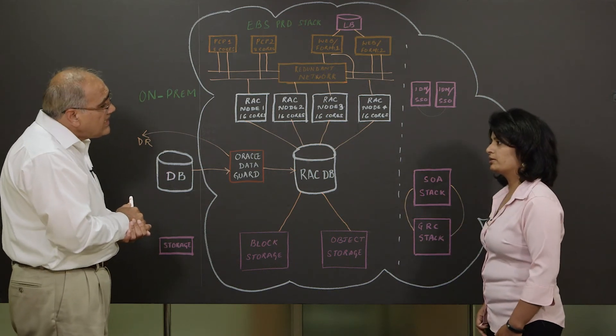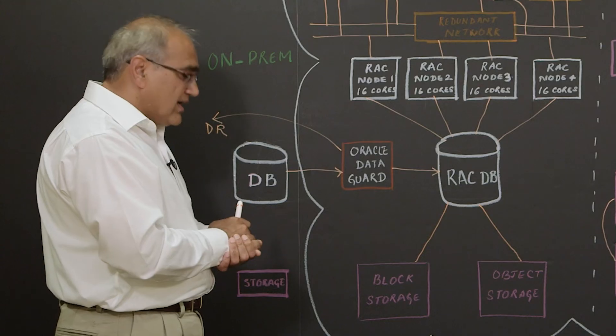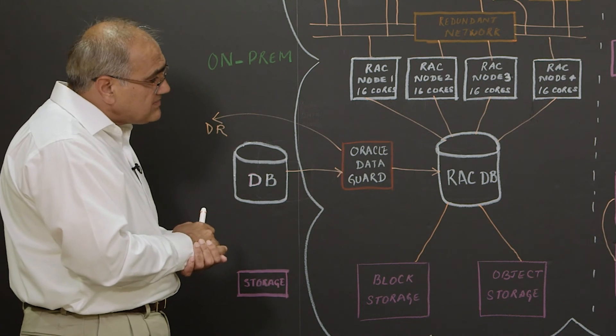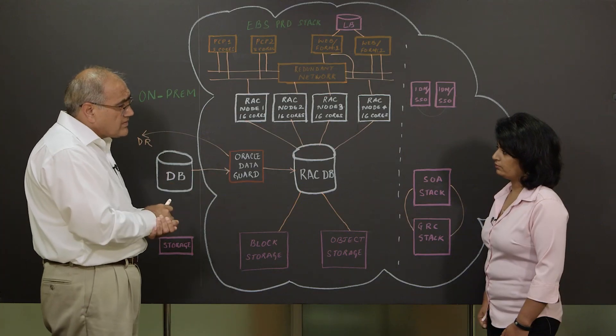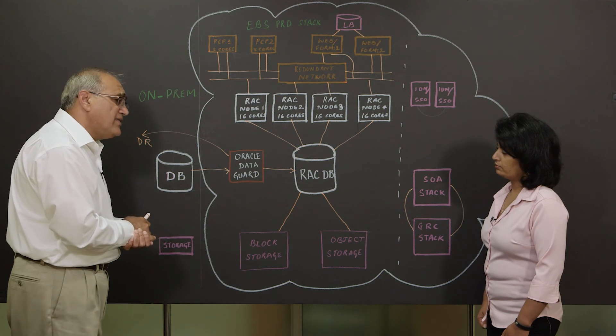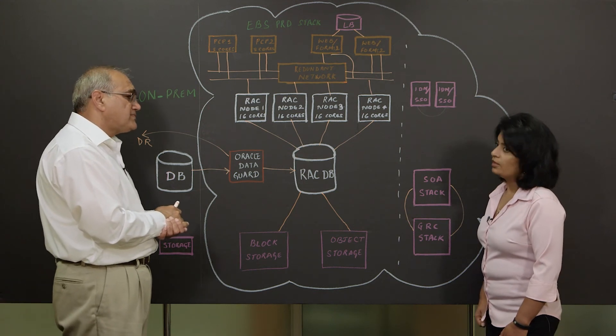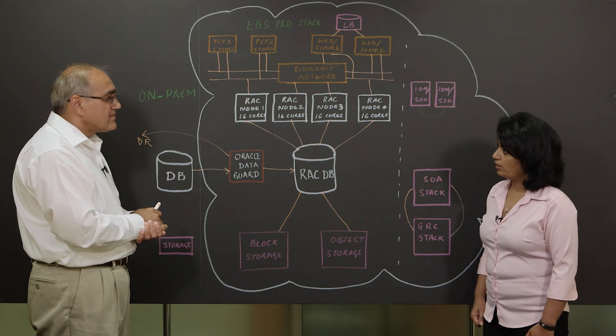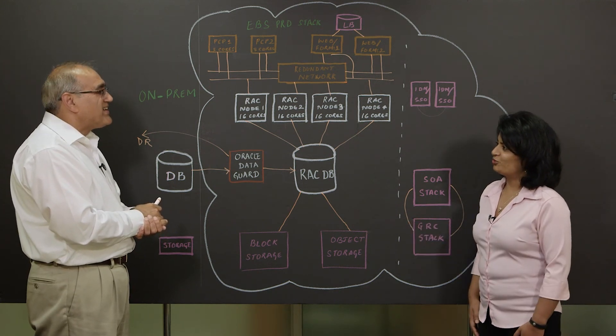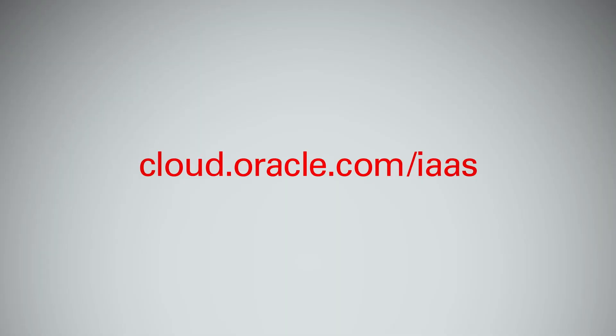And then the GRC stack? Yeah. The GRC stack is used for governance and risk compliance. And this is used for a lot of SOX compliance and FDA and so on and so forth. That's a great implementation of EBS on OCI, Oracle Cloud Infrastructure. Thank you so much for sharing your architecture with us. You're welcome. Thank you.